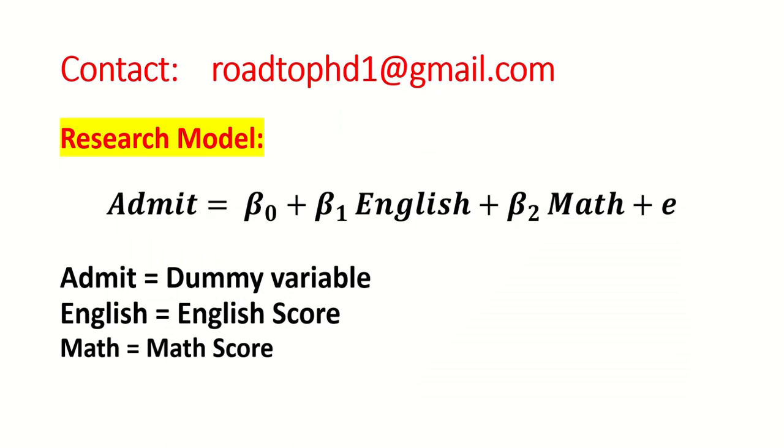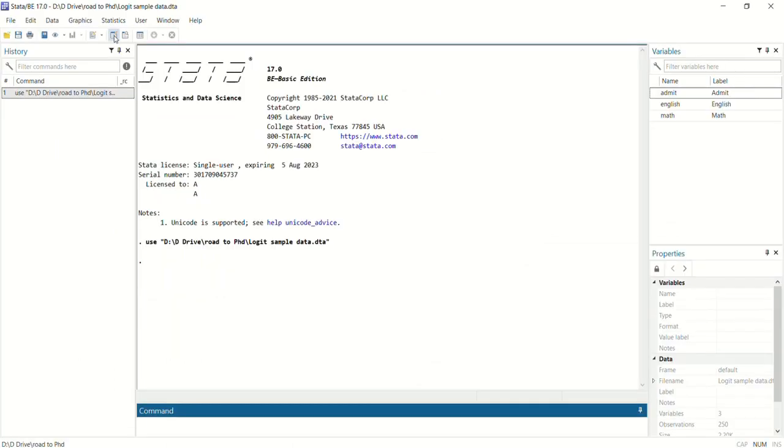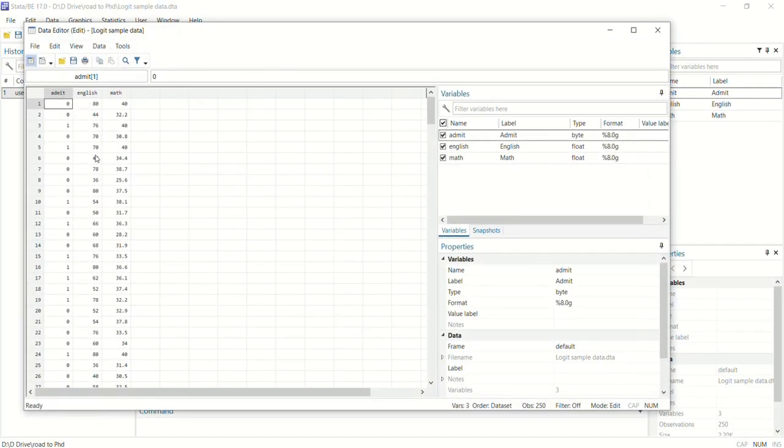The research model that we will use for this exercise contains three variables. Number one is admit which is a dummy variable containing two values 0 and 1. Then we have two continuous variables for math score and English score.